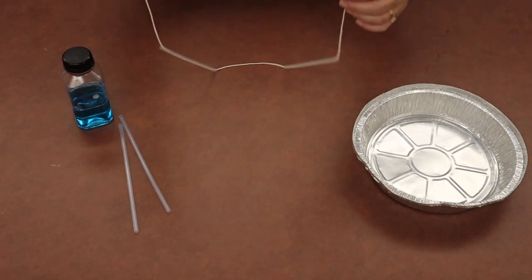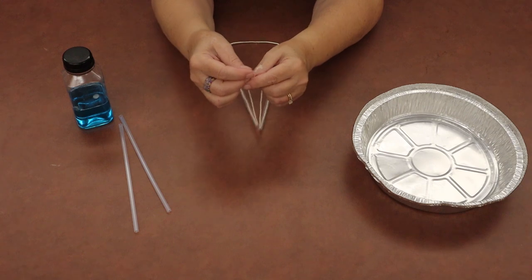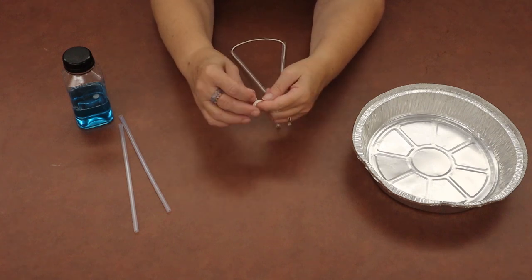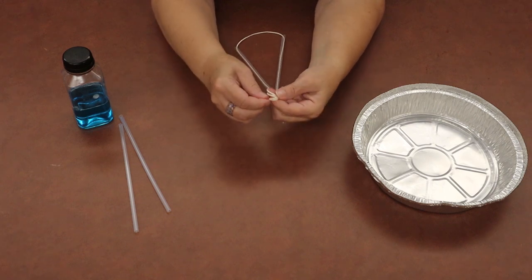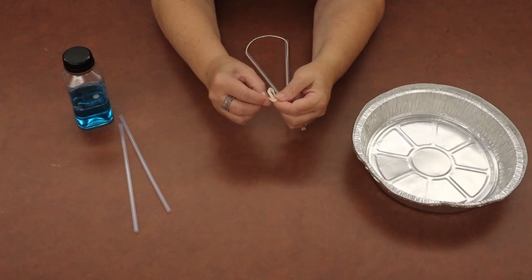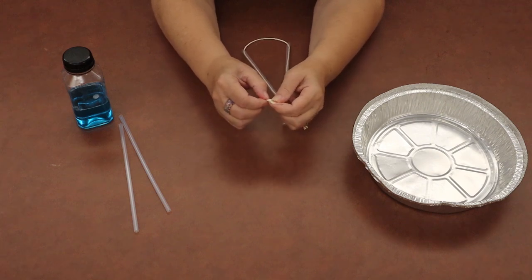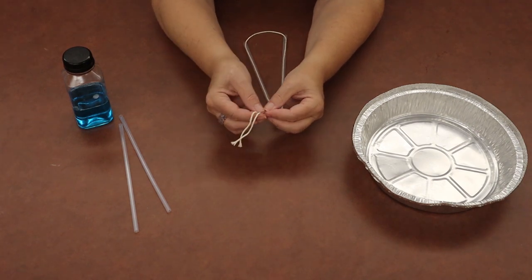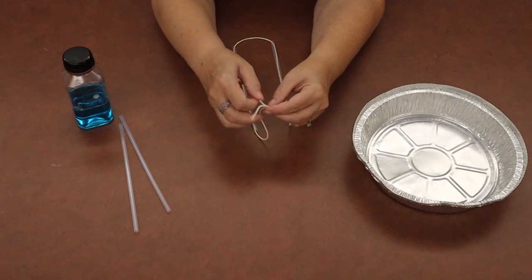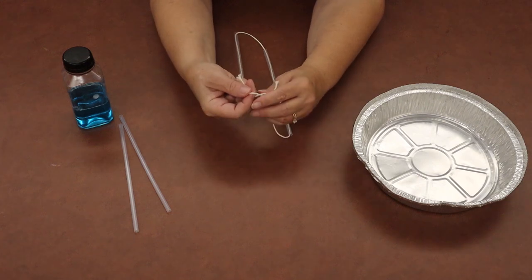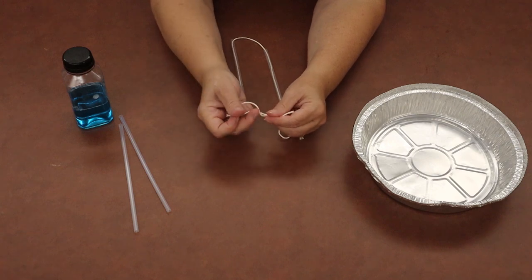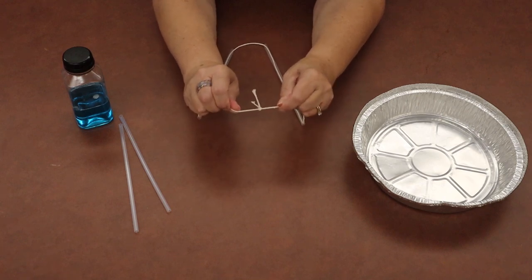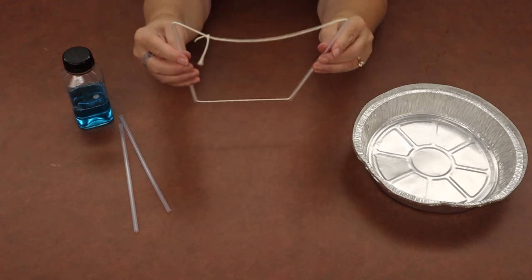Once you have two straws on your string, you can take your string and tie a knot however it's easiest for you. You can either wrap it around your finger and pull the ends through like this and tighten it, or if it's easier for you, you can take the ends of the string and tie them like you would a shoelace. Wrap one over and then wrap them around again, make a knot and pull it tight. That's going to be our bubble wand.